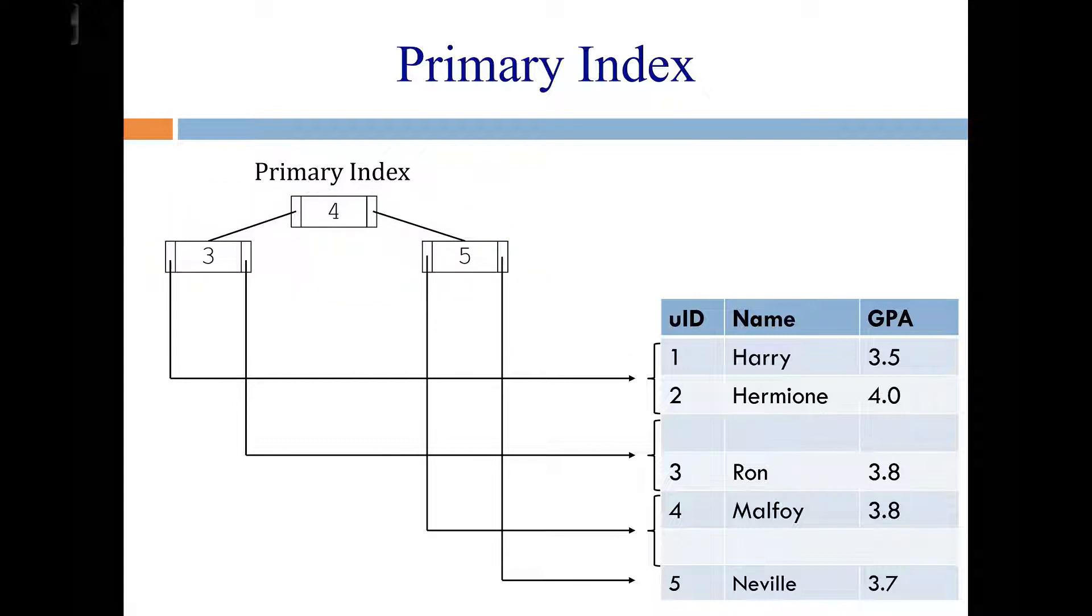But let's look at these pointers. So everything to the left of the key 3, so that's pointing here into this page. So this page is holding two rows, and those are the two rows that have UIDs less than 3. And right there in the page is the rest of the row data. So it would contain the name and the GPA for those records. And then we've got all of the other rows. So here's another node, a leaf node, or a page. Here's another leaf node.